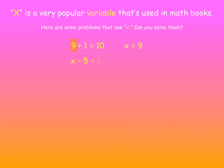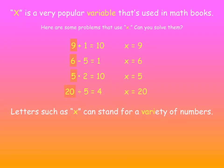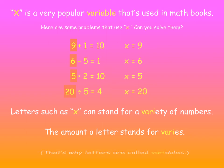How about X minus 5 equals 1? What number would fill for X? How about 6? Yes, that 6 would work. Something times 2. X times 2 equals 10. X has got to be 5. Yep. And X divided by 5. Something divided by 5 is 4. It would have to be 20 because 20 divided by 5 is 4. Okay, well, letters such as X can stand for a variety of numbers. The amount a letter stands for varies. And that's why letters are called variables.